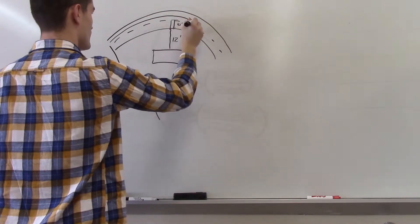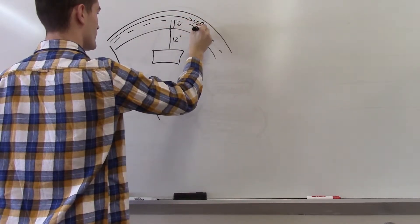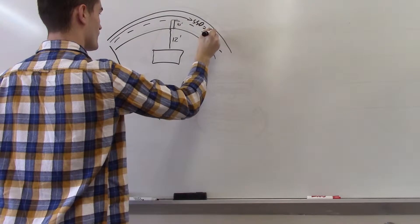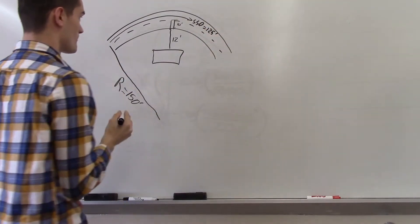which is 150 feet, the lane width, which is 10 feet, the distance from the edge of the road to the building, which is 12 feet, and the required stopping sight distance, which is 125 feet.